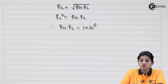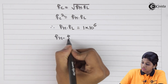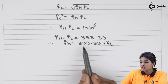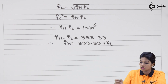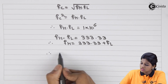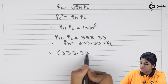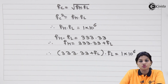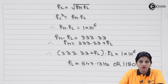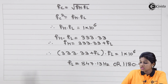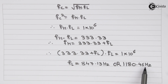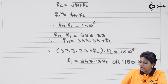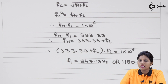We have two equations: fh minus fl equals 333.33, and fh × fl equals 1 × 10⁶. Expressing fh equals 333.33 plus fl and substituting into the product equation gives a quadratic in fl. Solving the quadratic equation, we get fl equals 847.13 Hz or 1180.46 Hz. We take the smaller value, so fl equals 847.13 Hz.